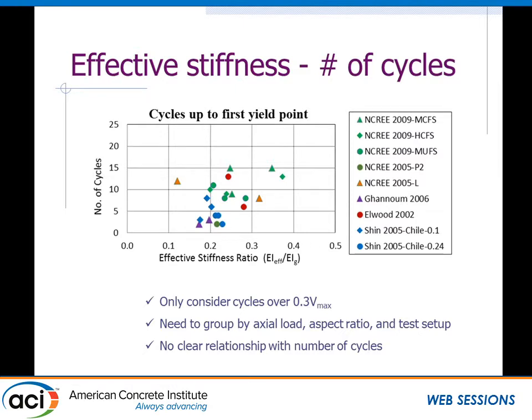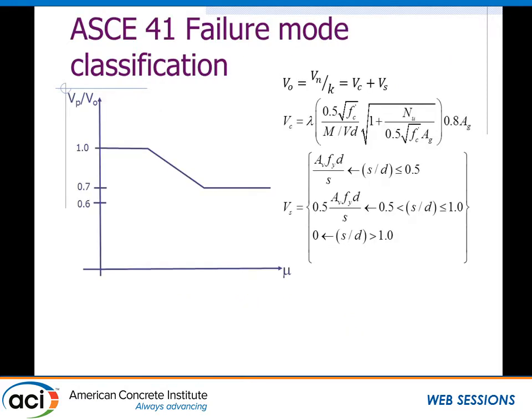We might be interested in using the dynamic database to look at effective cycles, because these columns actually do experience the right number of cycles for an earthquake. We pulled out the number of cycles that exceed 30% of the maximum shear. It's difficult to see a trend — if you look at sets of data within common test groups you might see a bit of a trend, but it's not conclusive. Further study is necessary, and this data set could potentially be used for that in the future.